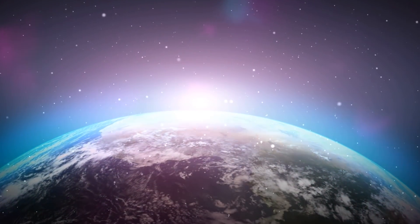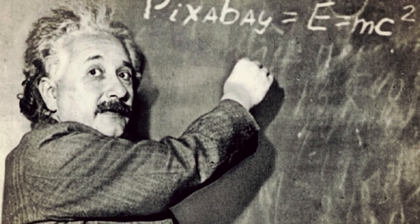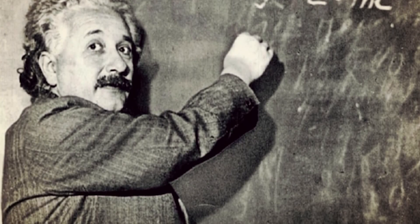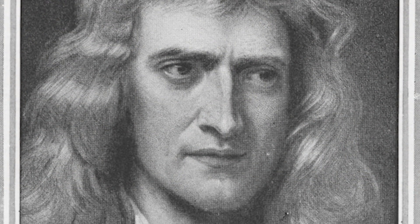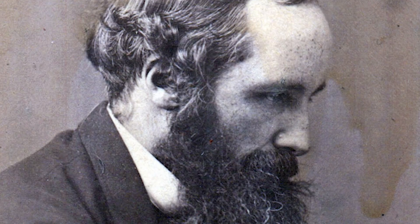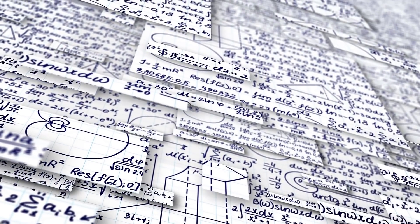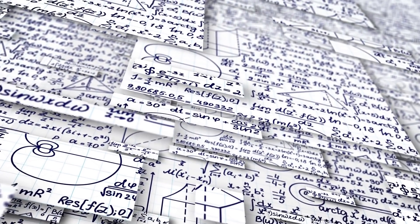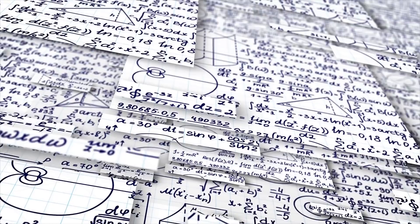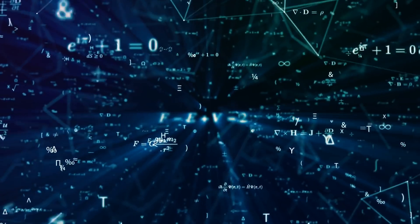Because the speed of light is constant. But therein lies the problem that Einstein realized. Because Newton said that no speed in the universe could be an absolute, but then Maxwell counters this by saying the speed of light is always a constant. Which means that these two very universal and very accepted pieces of science are at a contradiction — which is something you never want in the world of science.